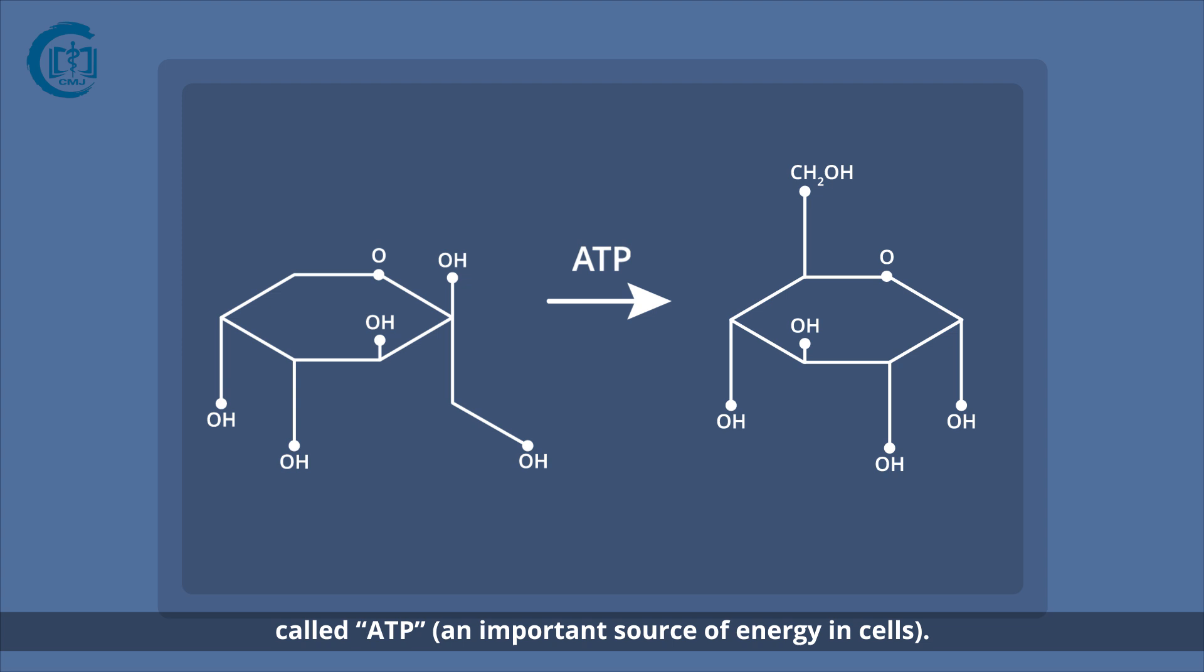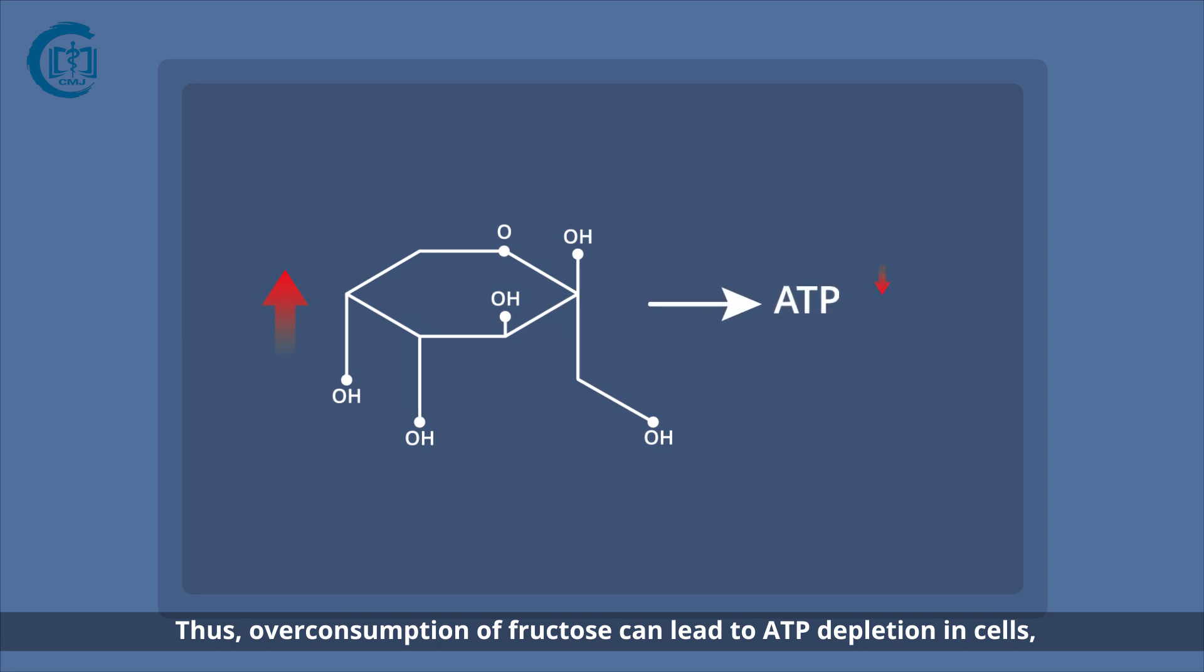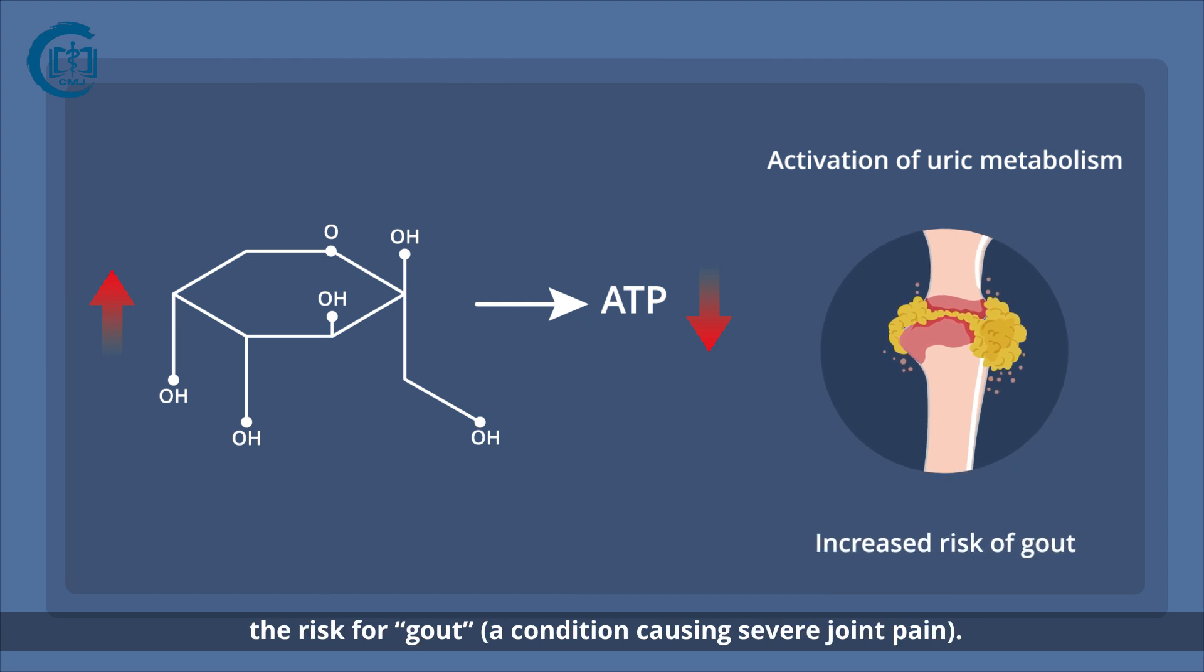an important source of energy in cells. Thus, overconsumption of fructose can lead to ATP depletion in cells, which activates uric acid metabolism and increases the risk for gout, a condition causing severe joint pain.